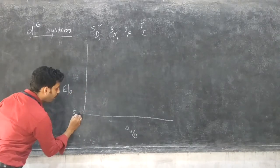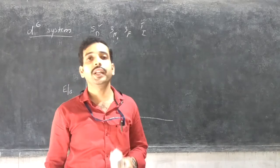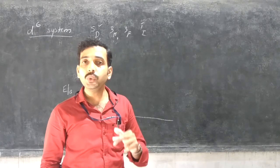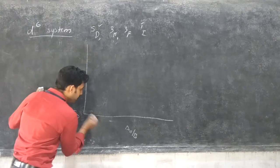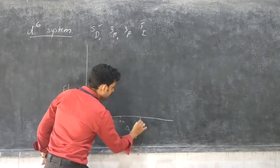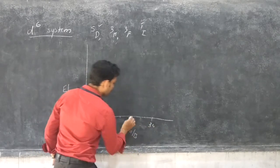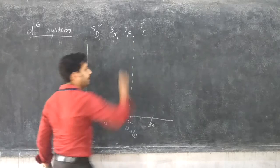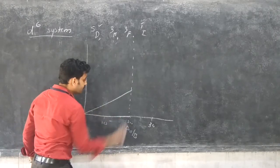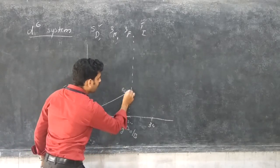The ground state term is 1I. Other Russell-Saunders terms are 5D, 3H, and 3F. Out of these, we consider 5D and 1I for the Tanabe-Sugano diagram of the D6 system, plotting delta-0/B against E/B. According to the Orgel diagram, the D6 octahedral geometry is the right half of the Orgel diagram.